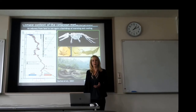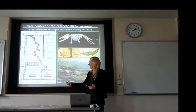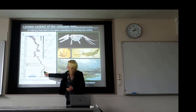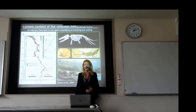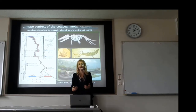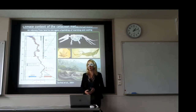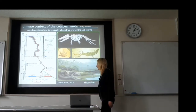Even though benthic foraminifera sail through the Cretaceous-Paleogene mass extinction, they take a big hit at the Paleocene-Eocene thermal maximum. There are lots of warm, abrupt hyperthermals that happen in this period, and they culminate in this Eocene climatic optimum — which is the backdrop set for the movement of mammals back into the water and the story of the evolution of whales.